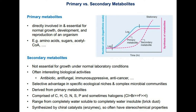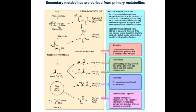A secondary metabolite is a chemical compound which is not essential for growth under normal laboratory conditions. It is often derived from the primary metabolites — for example, fatty acids, which are a type of polyketide.